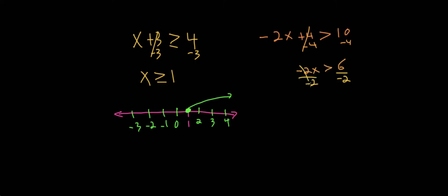So this cancels out to 1. And we flip the sign. So let's go ahead and do that so we don't forget. So we flip the sign. And then 6 divided by negative 2 is negative 3. So we get x is less than negative 3.